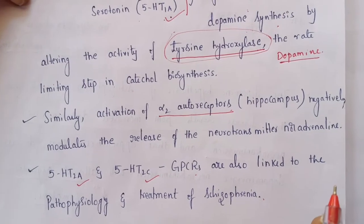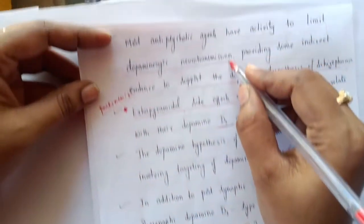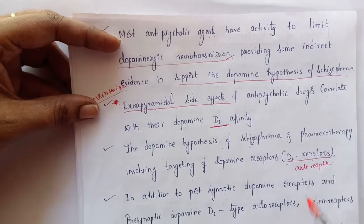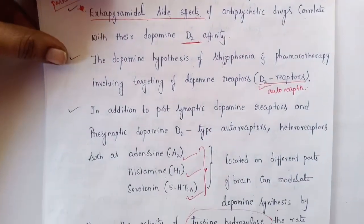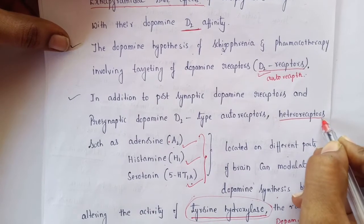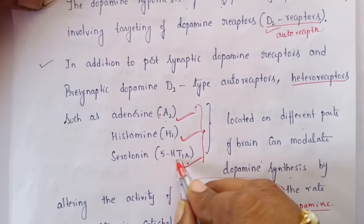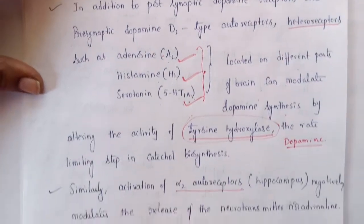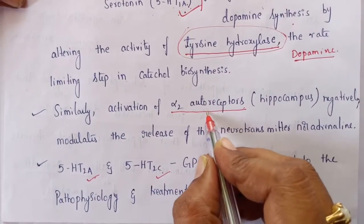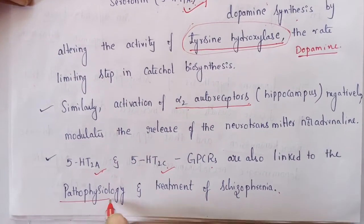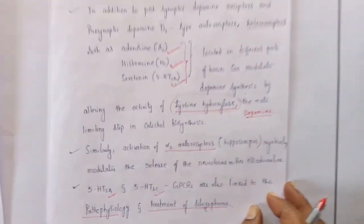In summary, schizophrenia is majorly caused by overactivity of dopaminergic neurotransmission in the mesolimbic system. The major receptor targeted is the D2 receptor, along with heteroreceptors including adenosine, histamine, serotonin subtypes (5-HT1A, 5-HT2A, 5-HT2C), and alpha-2 adrenergic receptors — all playing important roles in the pathophysiology and treatment of schizophrenia. This concludes the introduction to psychosis and schizophrenia.